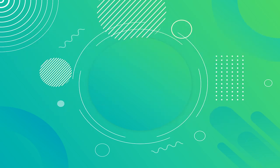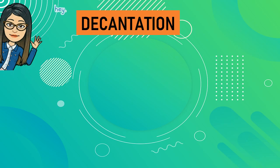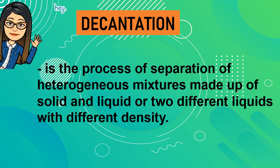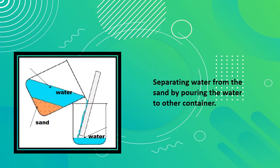Let us first discuss what decantation is. Decantation is the process of separation of heterogeneous mixtures made up of solid and liquid, or two different liquids with different density. An example is the mixture of sand and water — once the sand settles at the bottom, you can separate the water by pouring it into another container. Another example is oil and water, because they have different densities.